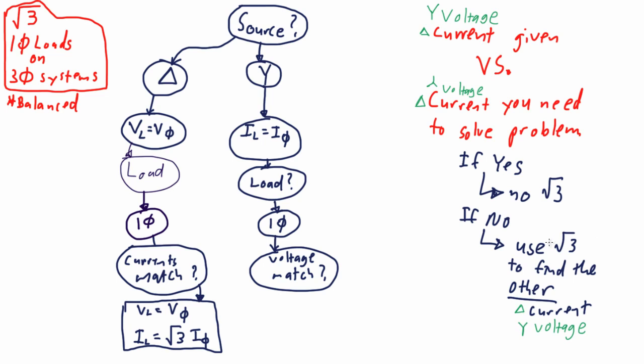If it doesn't match, meaning if we were supplied with line voltage and the load is connected line to neutral, then we're going to need to use the root three on the voltage to get a final voltage product that will allow us to do our calculation. Let me give you the formulas right here to show it very clearly.